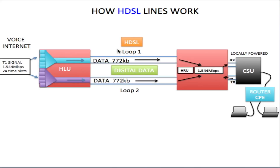With HDSL lines, unlike ADSL, the voice signal sent into the line is digital and the internet signal is also digital. The speed is 1.544 megabits per second, and this is a constant speed — unlike ADSL, you do not have a wide range of different speeds. With HDSL all you have is one T1 speed: 1.544 megabits per second. When data is sent into an HLU — whether from voice or from the internet — that data is 1.544 megabits per second maximum.